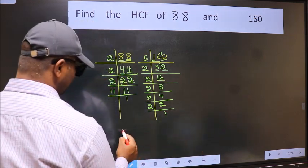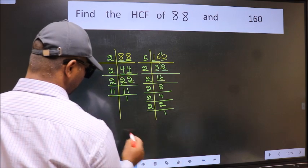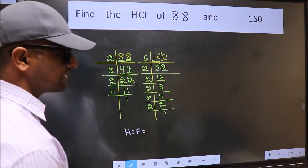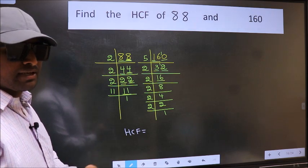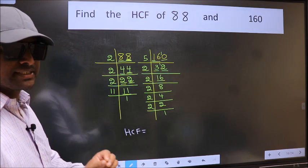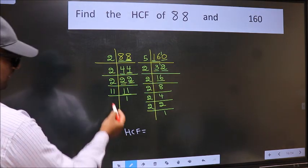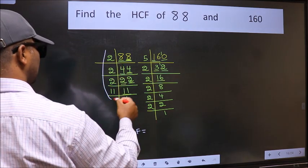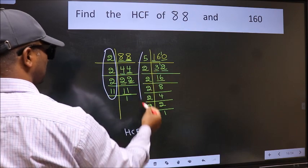Therefore, our HCF is - HCF is the product of the numbers which should be present in these two places. That is here and also here.